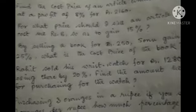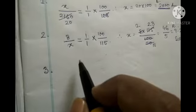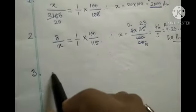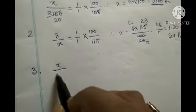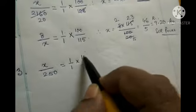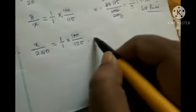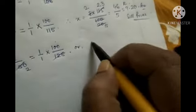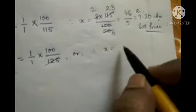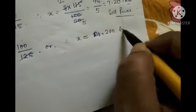For Problem 3, we use Formula 1 since profit percentage is given. Cost price is x, divided by sale price 250, equal to 1 by 1 into 100 divided by profit percent, which is 25, giving 125. After cross multiplication, x equals rupees 200. That is the answer.